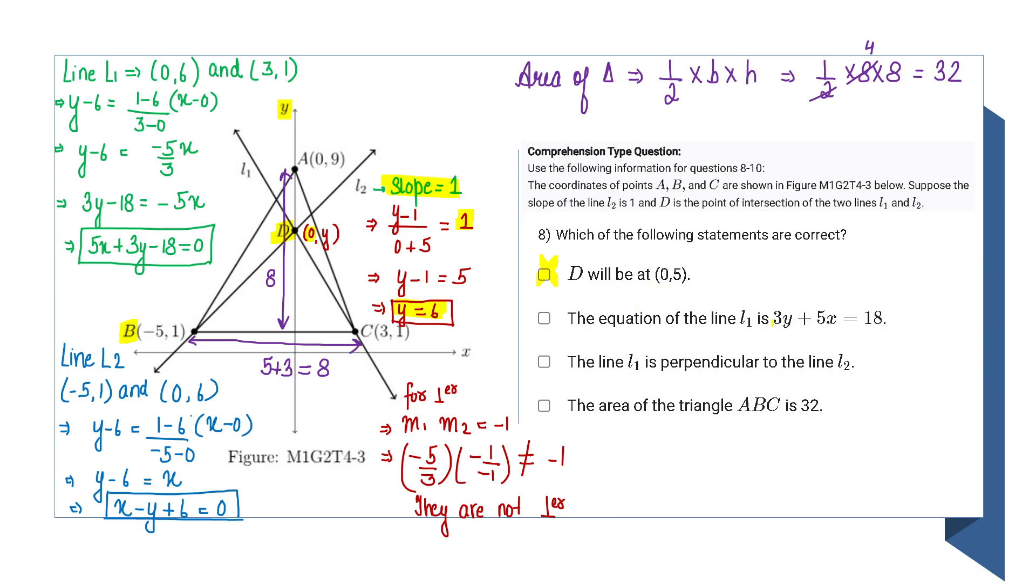Now let's find out the equation of line L1. Line L1 passes through two points: D is (0,6) and C is (3,1). Using the two-point form, I will find the equation of line L1, and that is 5x + 3y - 18 = 0.